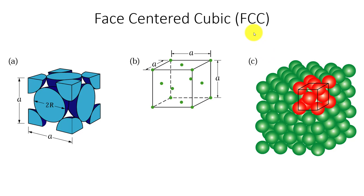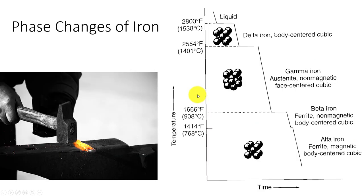Face centered cubic is not magnetic. So if I take a magnet and put it on steel at room temperature that's been heated up and slow cooled, it will stick. If I take this steel and heat it up to 1600 degrees Fahrenheit, above 800 degrees Celsius, and put a magnet on there, it will not stick because it's face centered cubic. Stainless steel — 316 stainless steel — is a face centered cubic material. Gold is face centered cubic. Lead is face centered cubic. Those materials are non-magnetic.